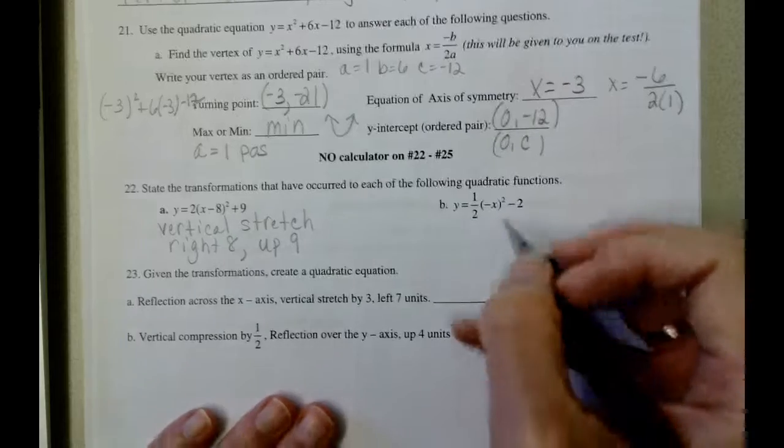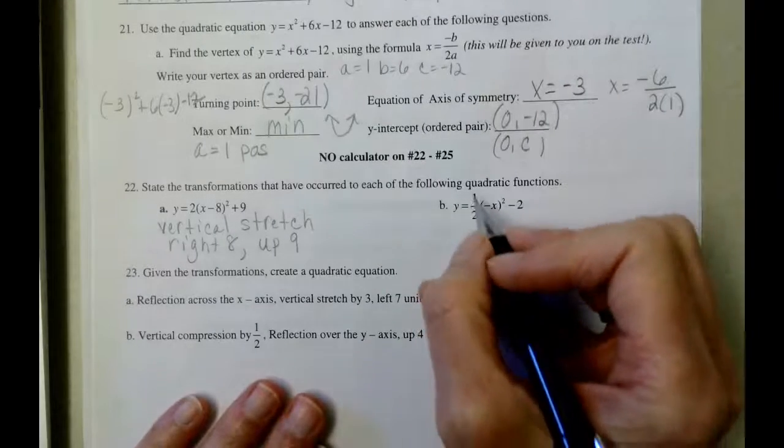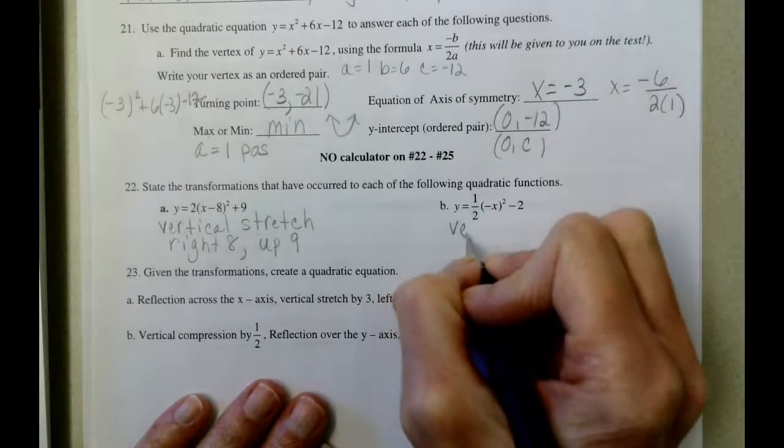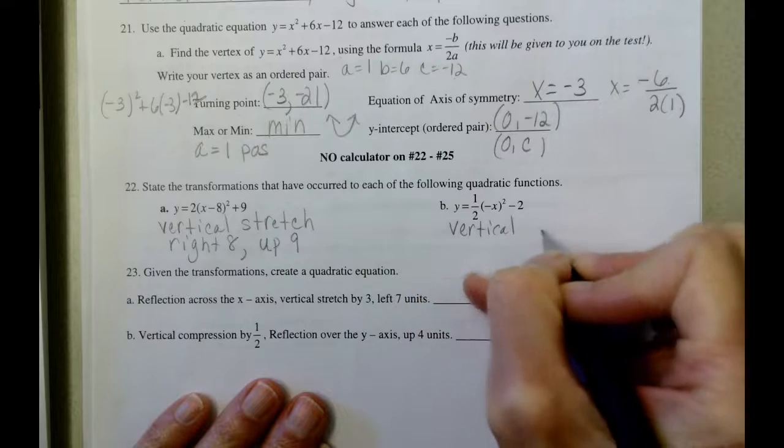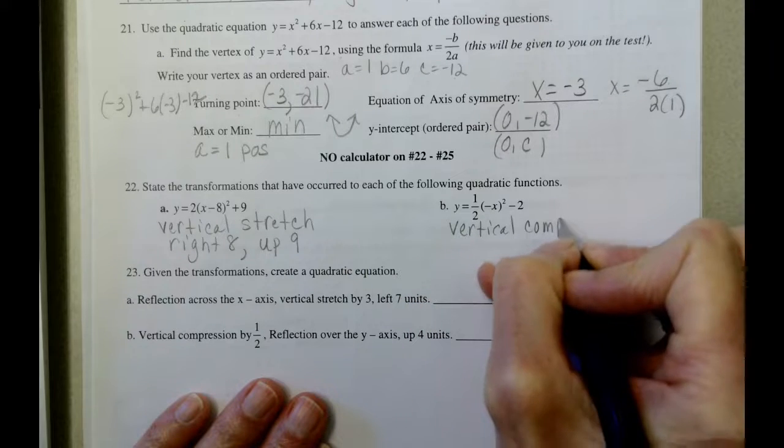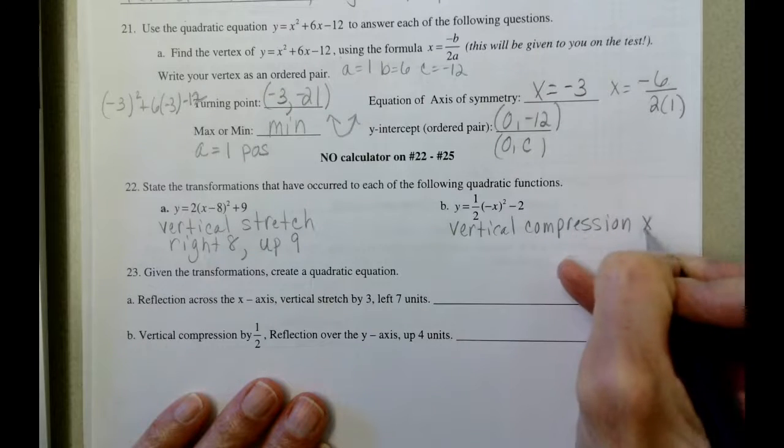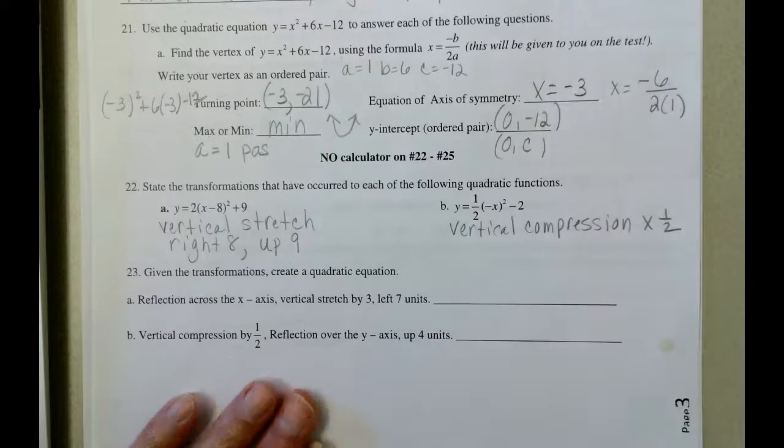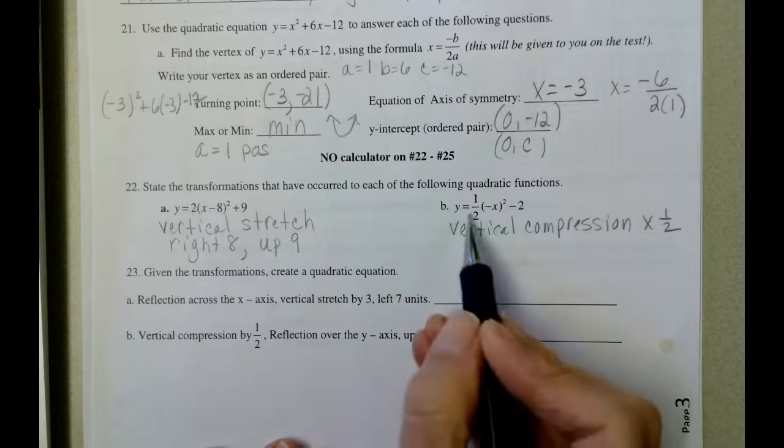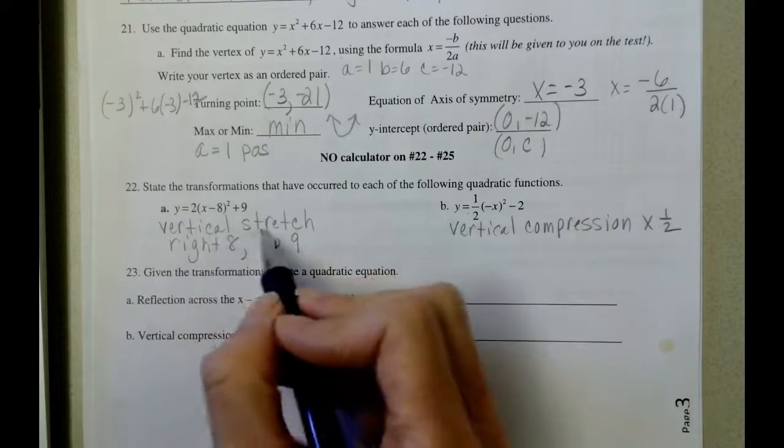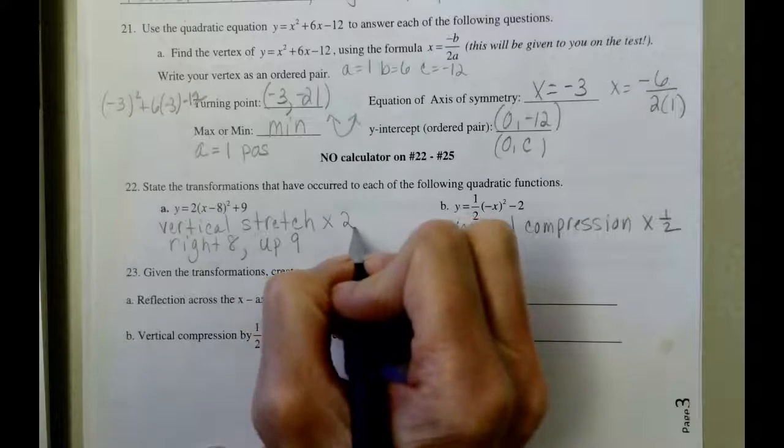And letter B, looking at the transformations, the 1 half is going to be a vertical compression. And I didn't write it on A, so I need to go back and do that, but it's a vertical compression by 1 half. This one back here on letter A is a vertical stretch by 2.